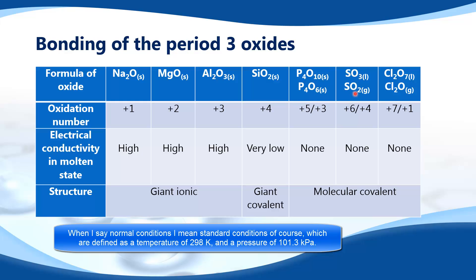In SO₃ the sulfur is +6. In SO₂ the sulfur is +4. In Cl₂O₇ the chlorine is +7. And in Cl₂O the chlorine is +1.